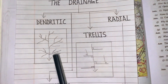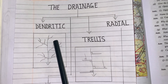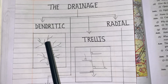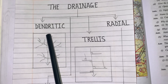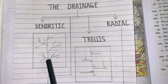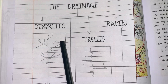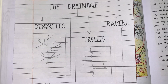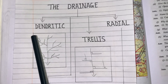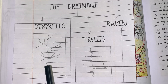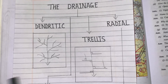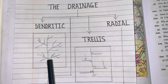Let us start with the dendritic drainage pattern. Here you will see in the diagram there is one main river. With the help of the arrow I have shown that, and other tributaries and sub-tributaries are joining. This gives the pattern like the branches of a tree, or you can say the veins of a leaf.